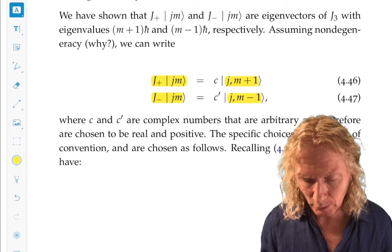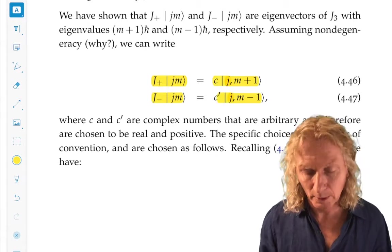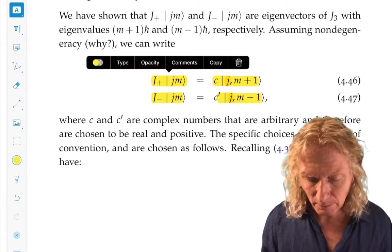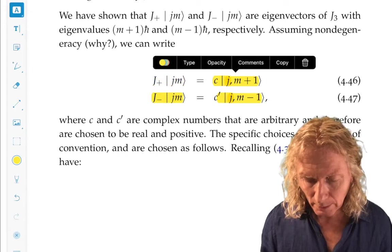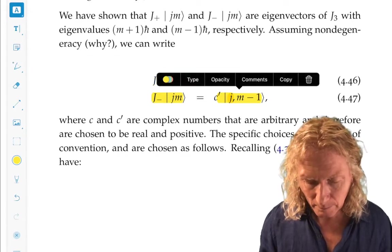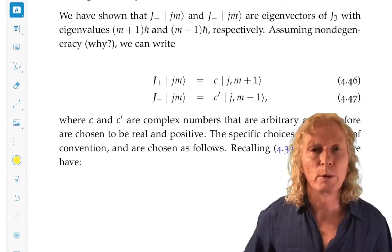Multiplying an eigenvector by a constant still gives us one. So we want to develop a convention for this. There are many conventions that's going to be useful when we want to compute matrix elements.